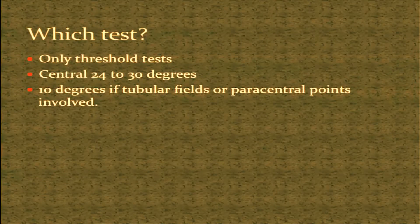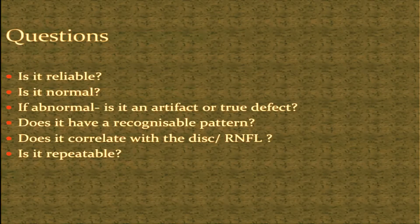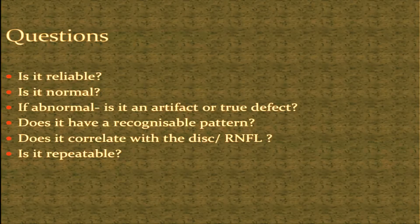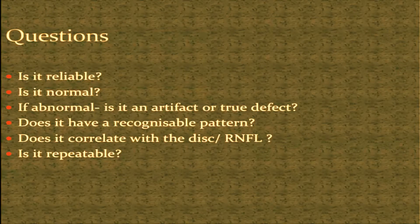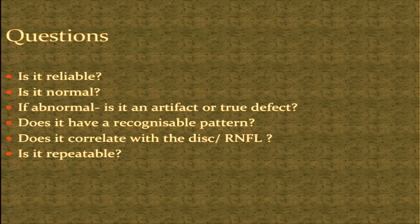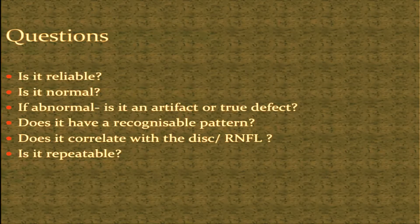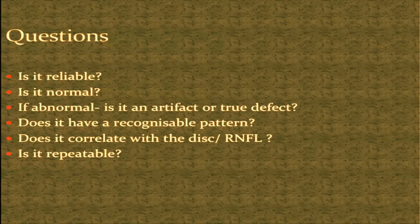If there are tubular fields or paracentral points are involved, then you should go ahead and do a 10-degree field. Now, any field when I see, I ask: is it reliable? Is it normal? If it is abnormal, is it an artifact or is it a true defect? Does it have a recognizable pattern? And more importantly, in glaucoma, does it correlate with the disc and the field, and is it repeatable? If you ask every field these six questions, most of the time you are able to identify a defect and tell what it signifies.